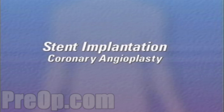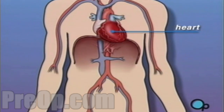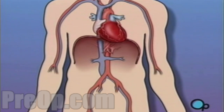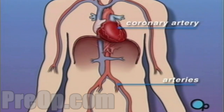Your doctor has recommended that you undergo a balloon angioplasty with a stent implant. But what does that actually mean? The heart is located in the center of the chest. Its job is to keep blood continually circulating throughout the body. The blood vessels that supply the body with oxygen-rich blood are called arteries. The arteries that supply blood to the heart muscle itself are called coronary arteries.